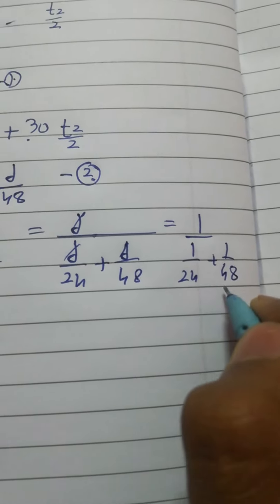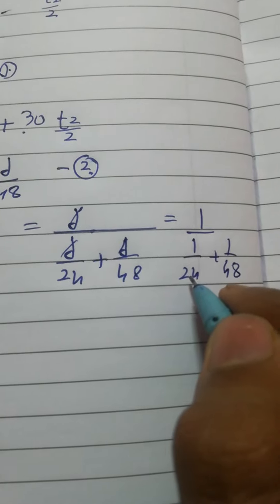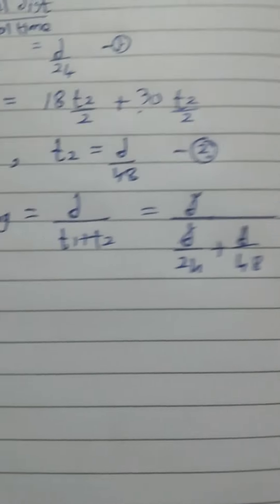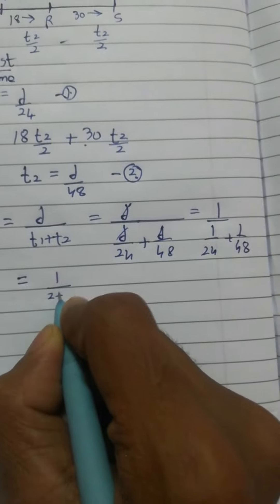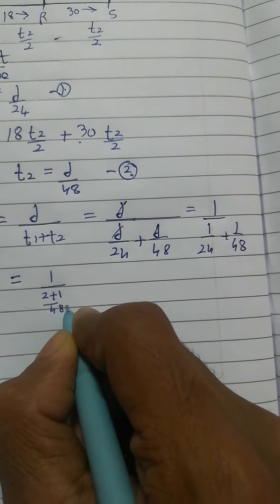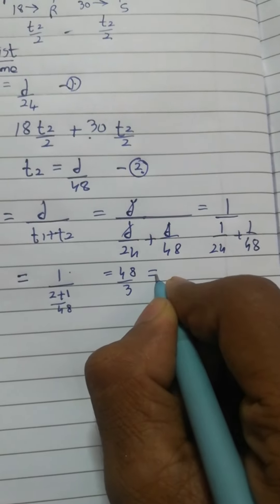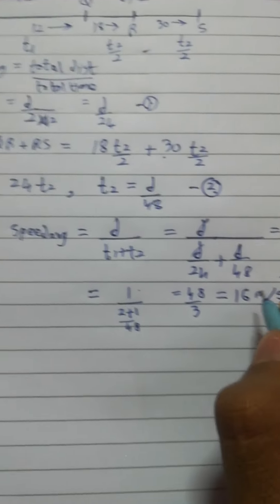So you can see that LCM of this both is 48 only. So we should multiply 24 by 2, so we would get answer. So this one would be equal to 1 by 2 plus 1 by 48, and 48 will come up, so 48 by 3. So this is 16 meters per second.